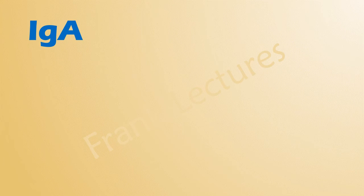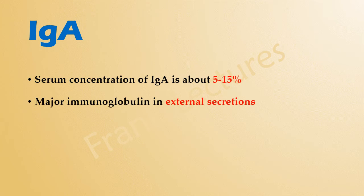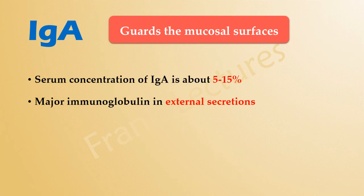Let's now talk about the properties of immunoglobulin A. IgA constitutes about 5–15% of the antibody concentration in human serum. It is the major immunoglobulin in the external secretions of the body, such as saliva, mucus, gastric fluid, tears, etc. So IgA guards and protects the mucosal surfaces of the body. The half-life of IgA is about 6 days.